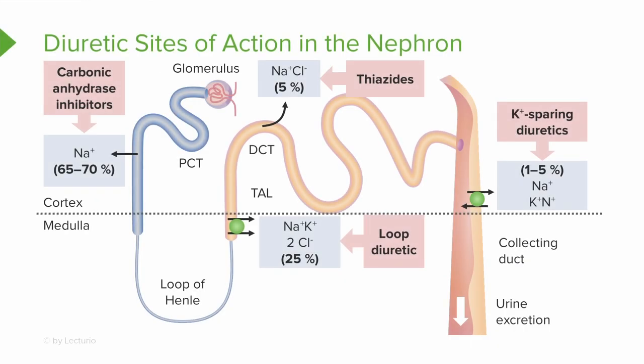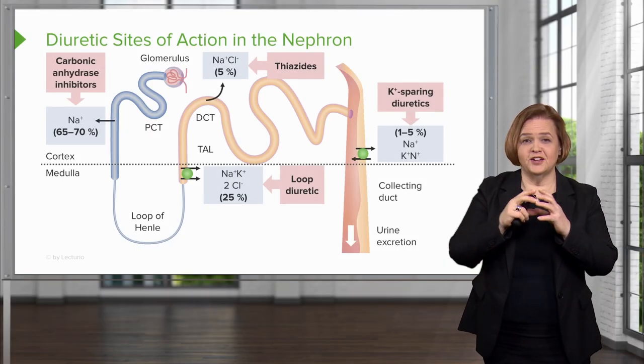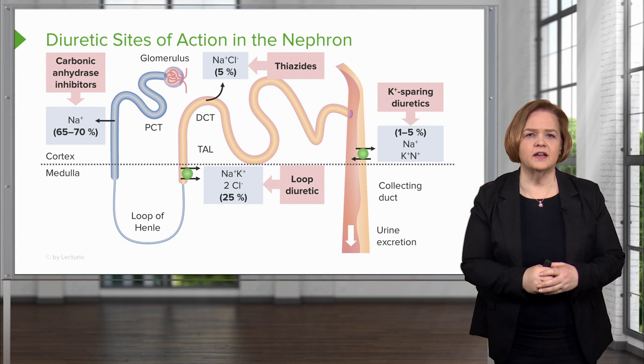This is a familiar drawing if you've seen our other diuretic videos — we've stretched the nephron out so you can see how it works. Start at the top where the glomerulus is, surrounded by Bowman's capsule, then it goes through to the tubules. Tracing all the way down, you have the collecting duct where urine is excreted.